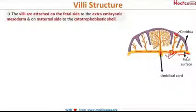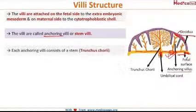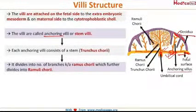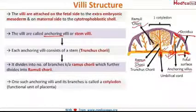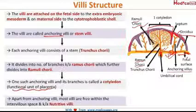Looking at the diagram of the villi structure: the villi are attached on the fetal side to the extra-embryonic mesoderm and on the maternal side to the cytotrophoblastic shell — these are called anchoring villi or stem villi. Each anchoring villus has a stem called the truncus chorii, which divides into branches called ramus chorii, further dividing into ramuli chorii. One anchoring villus along with all its branches forms one cotyledon, which is the functional unit of the placenta. Most villi are free within the intervillous space and are called nutritive villi. A recently asked exam question defined a cotyledon as the basal plate.